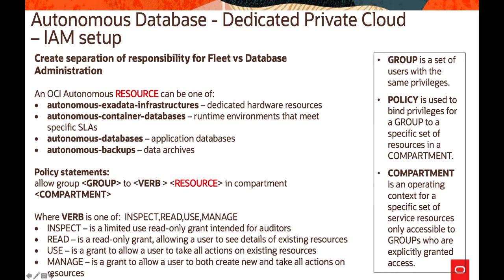To summarize: a group is a set of users with the same privileges; policies bind privileges for a group to a specific set of resources in a compartment; and a compartment is an operating context for a specific set of service resources, accessible only to groups explicitly granted access. In a policy statement, the verb is one of inspect, read, use, or manage — where manage is the highest level and inspect is the lowest.